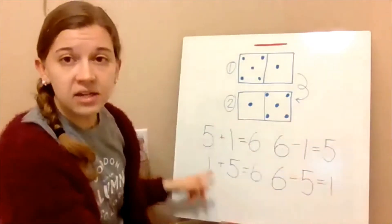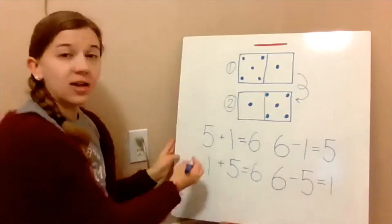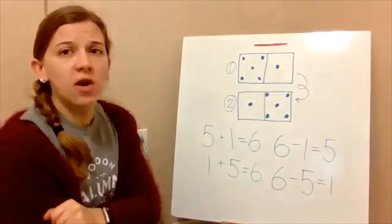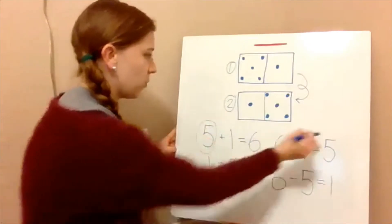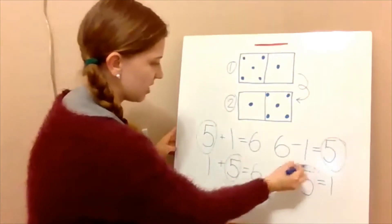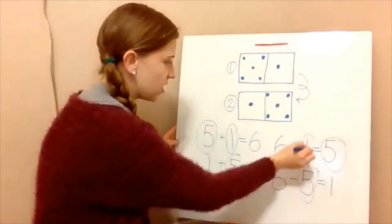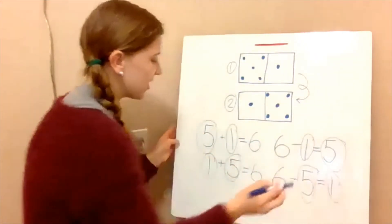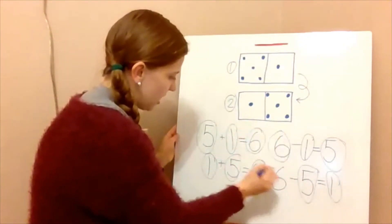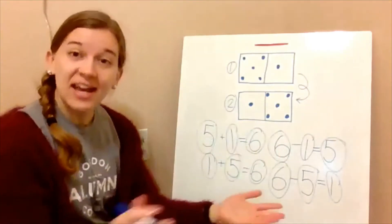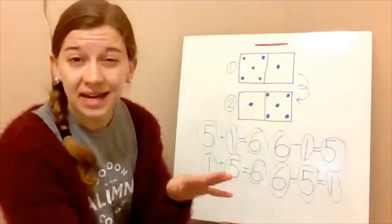So this is called a fact family. It's four addition and subtraction facts, and they all have the same numbers. Let's double check to make sure — every equation has a five, a one, and a six. They all have all three numbers, which makes them a fact family. They're all related to each other.